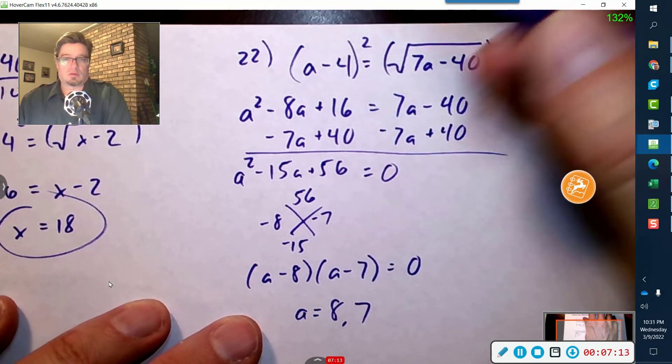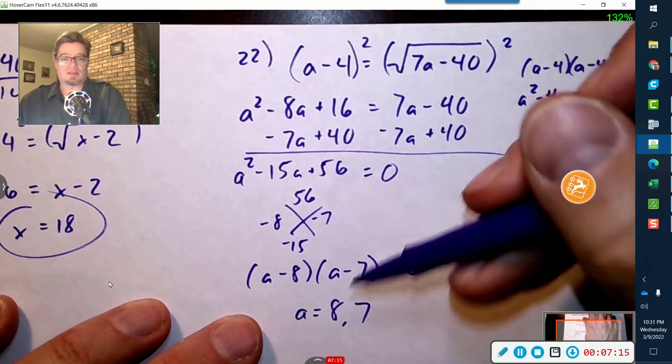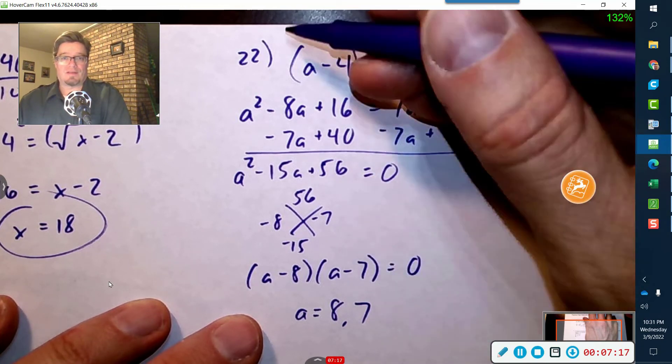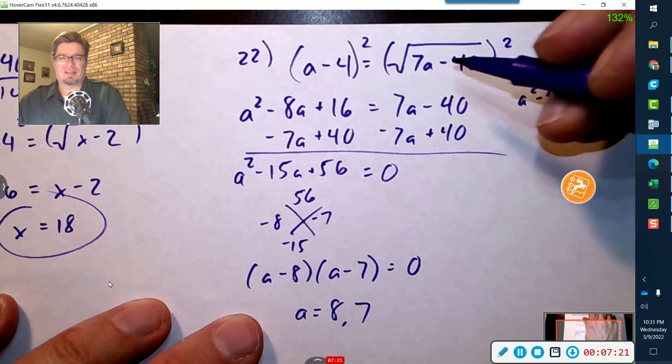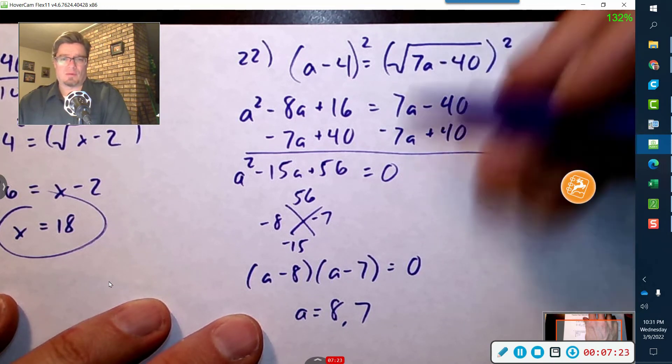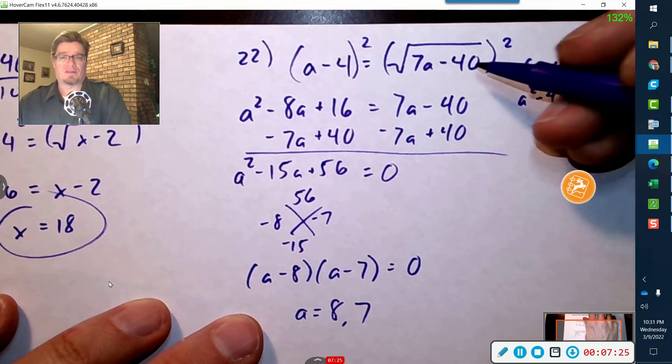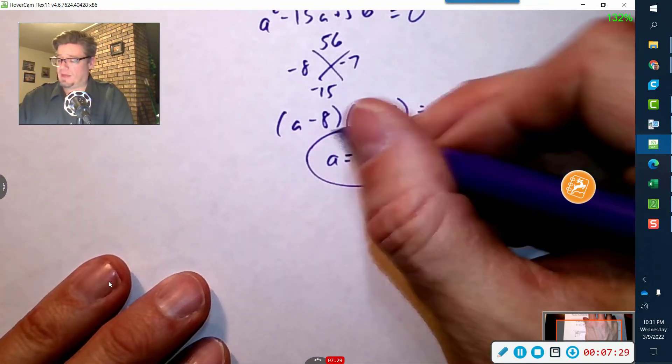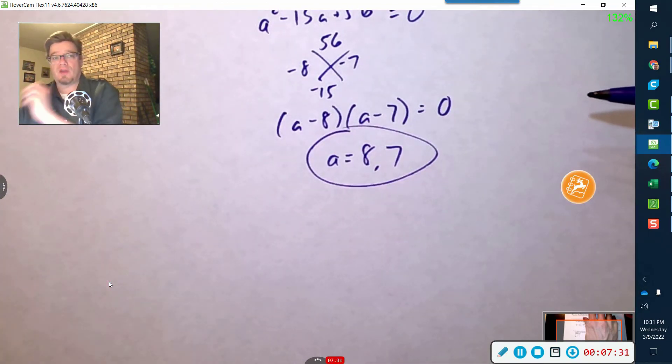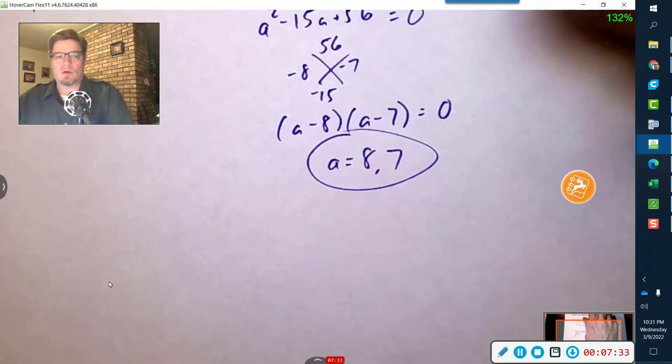But when I go back to the top I need to check these out. So eight minus four would give us four, okay, and that would equal the square root, so that's a positive four. And with the seven it'd be a positive three. So far so good. Eight fifty-six minus forty is a positive number. Seven forty-nine minus forty is a positive, so that's good. It's not going to actually give me any square root of negative numbers. Okay.